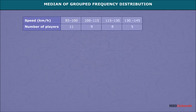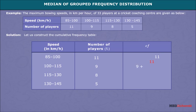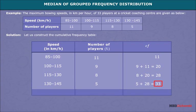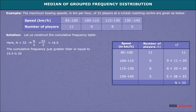Let us understand the steps taken in this method with the help of an example. Arrange the given table vertically, then make a column of cumulative frequency as shown by the animation, and obtain the value of n, which is 33. Here n is equal to 33, which implies n/2 is equal to 16.5. The cumulative frequency just greater than or equal to 16.5 is 20, for which the corresponding class is 100 to 115. So the median class is 100 to 115.